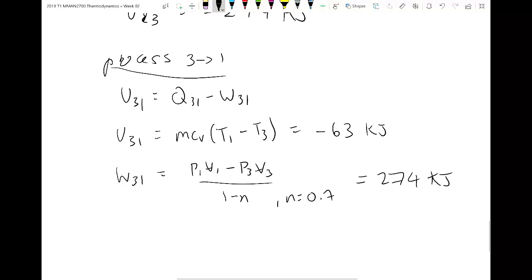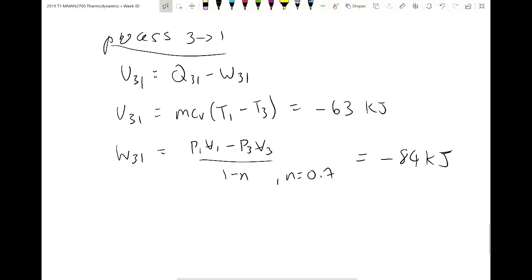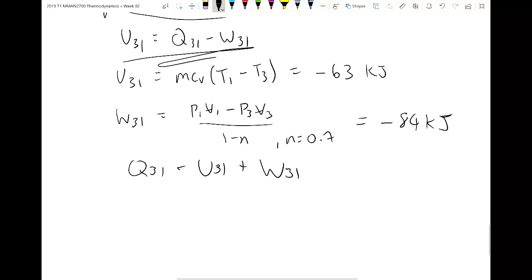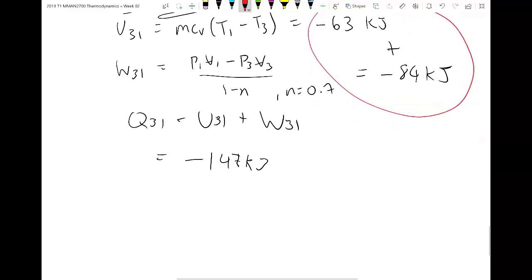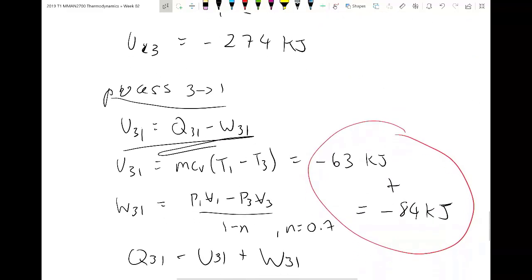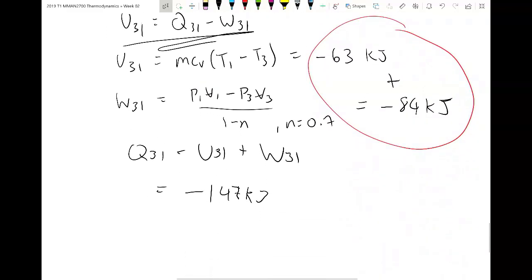So now you might be thinking, how do we find the heat transfer? Well, we just go to our first law equation. And we find that Q31 is equal to U31 plus work. Now, if you just add the two together, you should get negative 147 kilojoules. So that's these two added together here. And that gives you all the values for every process with the heat transfer as well as the work and internal energy.